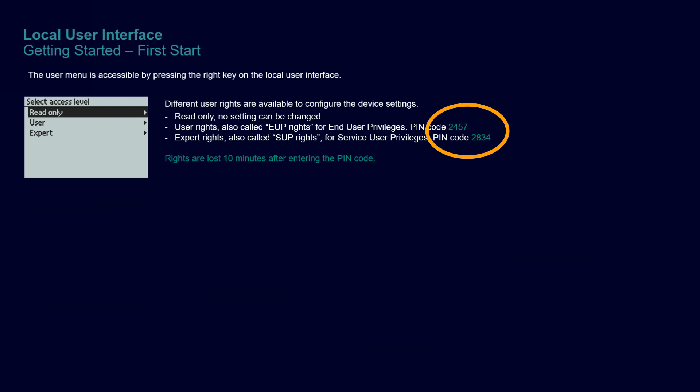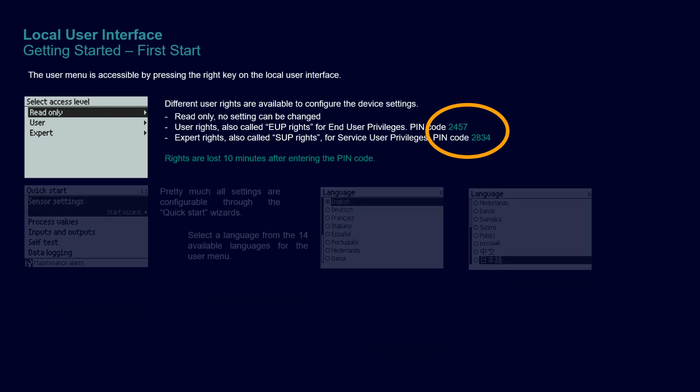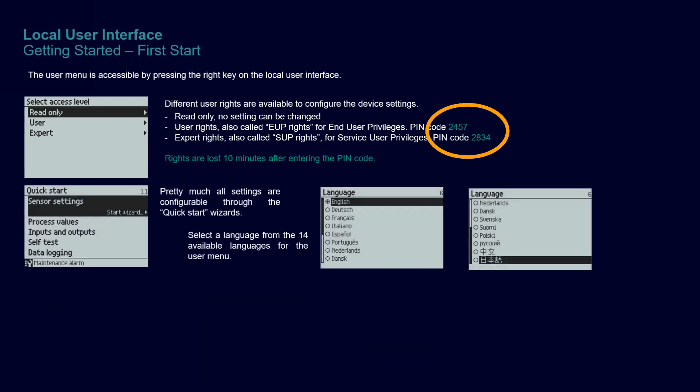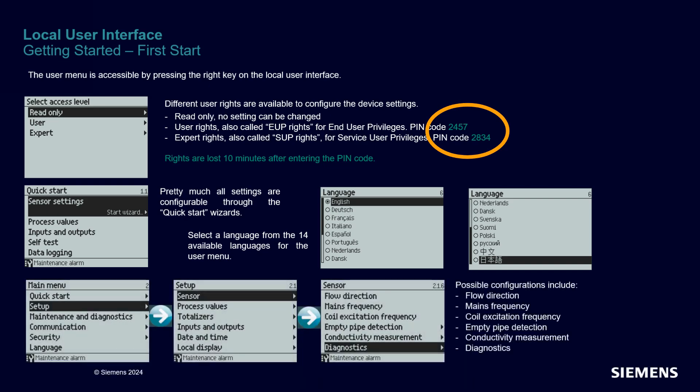You will certainly wish to set your language — you can already pick from 14 languages. Finally, you will want to set your system parameters under the setup menu. The FMT-020 offers numerous quick-start wizards, which will accompany you through the required steps to configure your system, making commissioning an easy task.